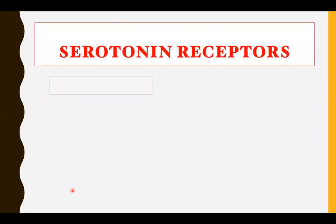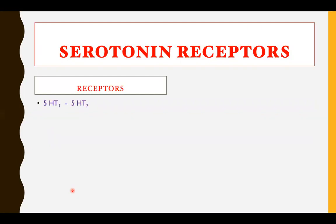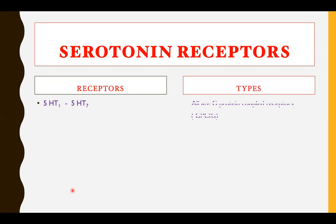The serotonin receptors are 5-HT1 through 5-HT7, and within each of these there are several subtypes. Please remember that all these receptors are G protein-coupled receptors — that is, metabotropic receptors — except 5-HT3, which is an ion channel.